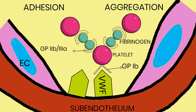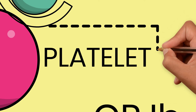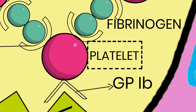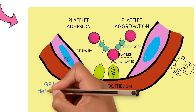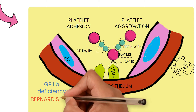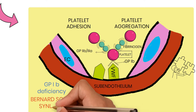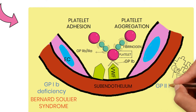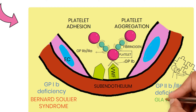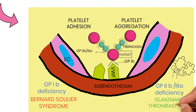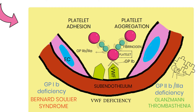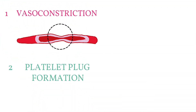This step where platelets are clumped together with the help of fibrinogen is known as platelet aggregation. Clinically, deficiency or decrease in the number of platelets — called thrombocytopenia — can result in bleeding. Deficiency of glycoprotein 1b receptor results in Bernard-Soulier syndrome, a platelet dysfunction disorder. Deficiency of glycoprotein 2b3a receptor results in Glanzmann's thrombasthenia, also a platelet dysfunction disorder.